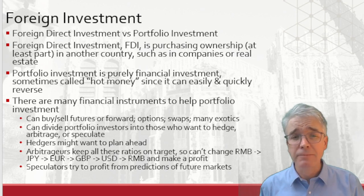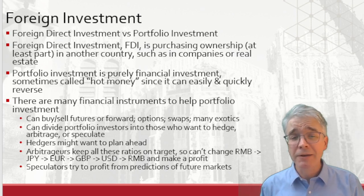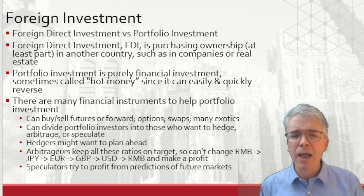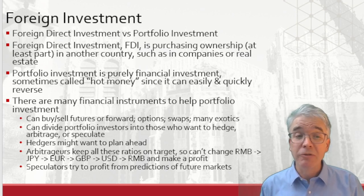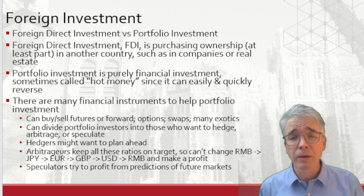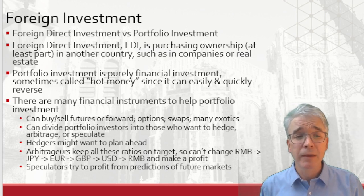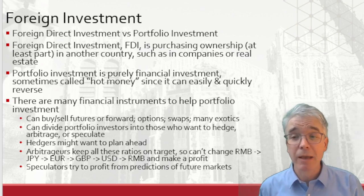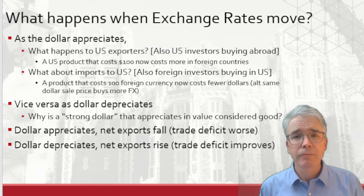There are also reasons to be in financial markets for arbitrage or speculation. Hedgers are the ones who want to plan ahead. Arbitrageurs are those who keep the multitude of exchange rates on target — if rates are not correct, you might be able to change renminbi to yen to euro to British pounds to dollars back to renminbi and make a profit. With hundreds of currencies and lots of different maturities, there are many numbers to keep in line. Arbitrageurs — mostly computer programs these days — keep those rates on target. Speculators try to profit from predictions about future market moves — gamblers, in another word.